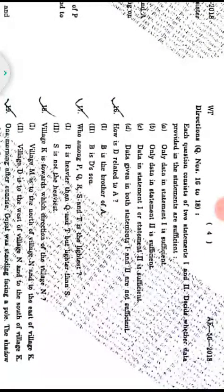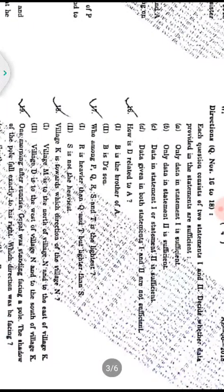Questions 16 to 18 are data sufficiency questions. We have to answer whether statement one is sufficient, statement two is sufficient, both are sufficient, or neither is sufficient. Question 16: How is D related to A? Statement one alone — B is the brother of A — is not enough. Reading statement two as well, we need both statements. Option C: data in statements one and two together is sufficient.